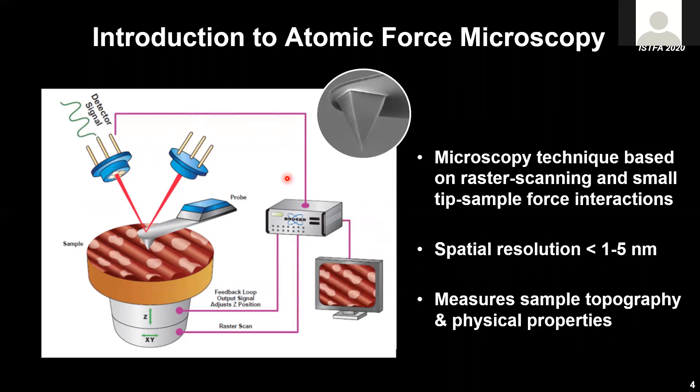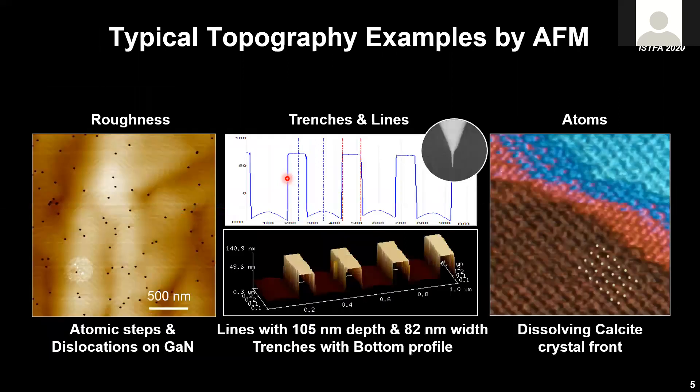The nice thing is that we can measure surface topography like volume, size, and roughness, but at the same time we can also measure some physical properties — and in failure analysis, that's often what our interest will be. Some typical topography examples here, though perhaps a little less failure analysis, still represent a lot of AFM measurements.